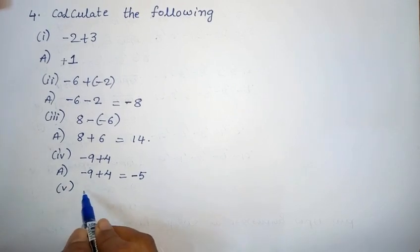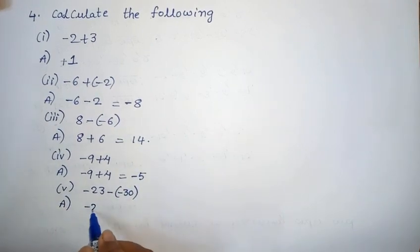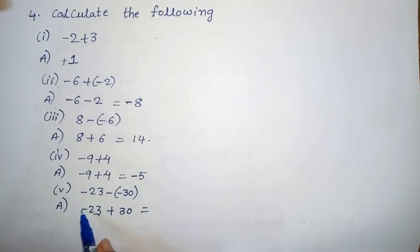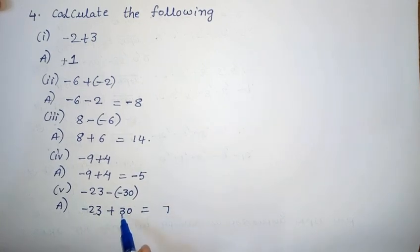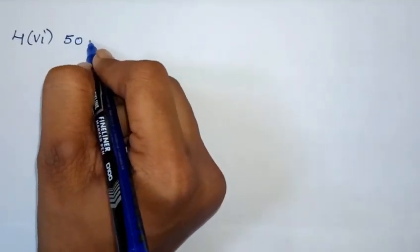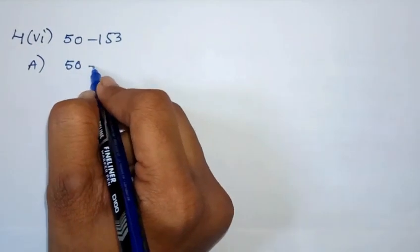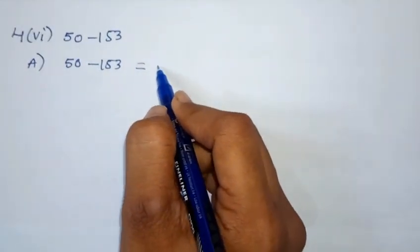4th Roman 5th one: minus 23 minus (minus 30). Minus times minus equals plus, so it becomes minus 23 plus 30. Opposite signs — subtract: 30 minus 23 equals 7. The bigger number 30 has a plus sign, so the answer is plus 7. 6th one: 50 minus 153. 50 is positive and 153 is negative, so 50 minus 153 equals minus 103.